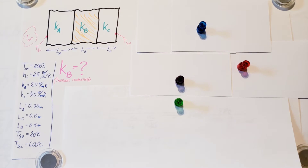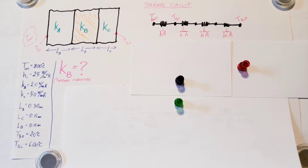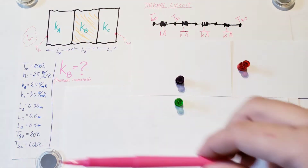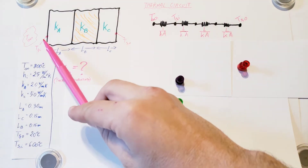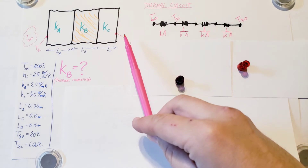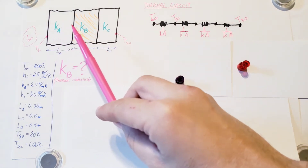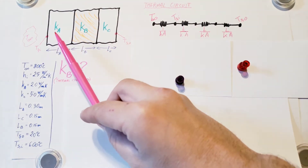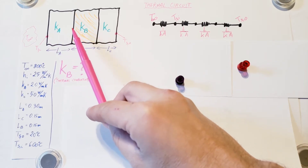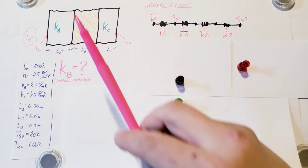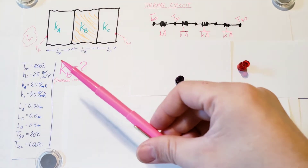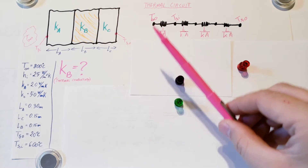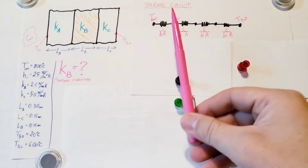This is a great problem for the application of thermal circuits. Let's make ours right here. We have convection on this side of the wall, and convection on this side of the wall. Through the wall, we have conduction — in this material, then in this one, and then in this one. All of these are in series, and that's how we're going to construct our thermal circuit.